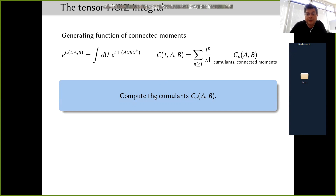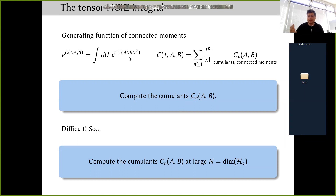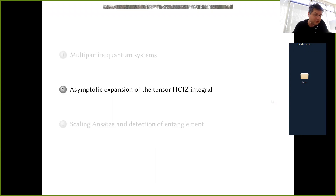The goal is to compute these cumulants obtained after averaging over U, which is a hard problem. Instead of computing them exactly, one can try to derive information by looking at how they behave for large systems. There is a parameter hidden in this integral — the size of the subsystem n — and one can try to understand what happens to these cumulants when n is taken to be large, i.e., studying the asymptotic behavior in the large-n limit.